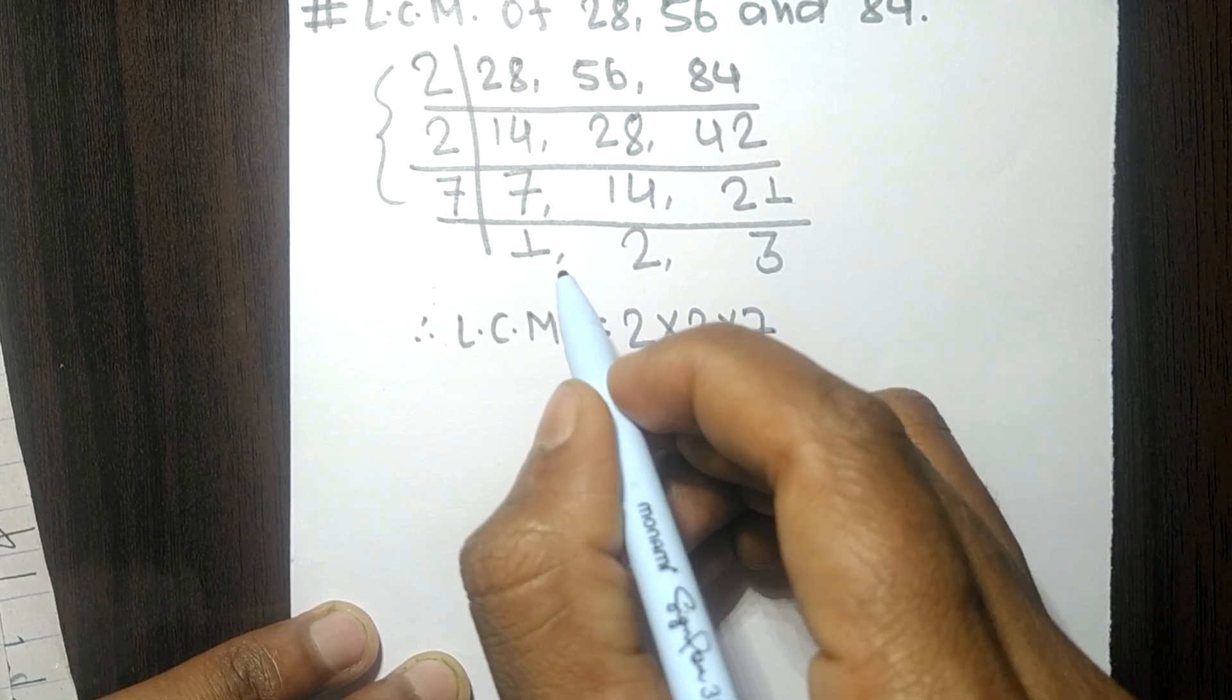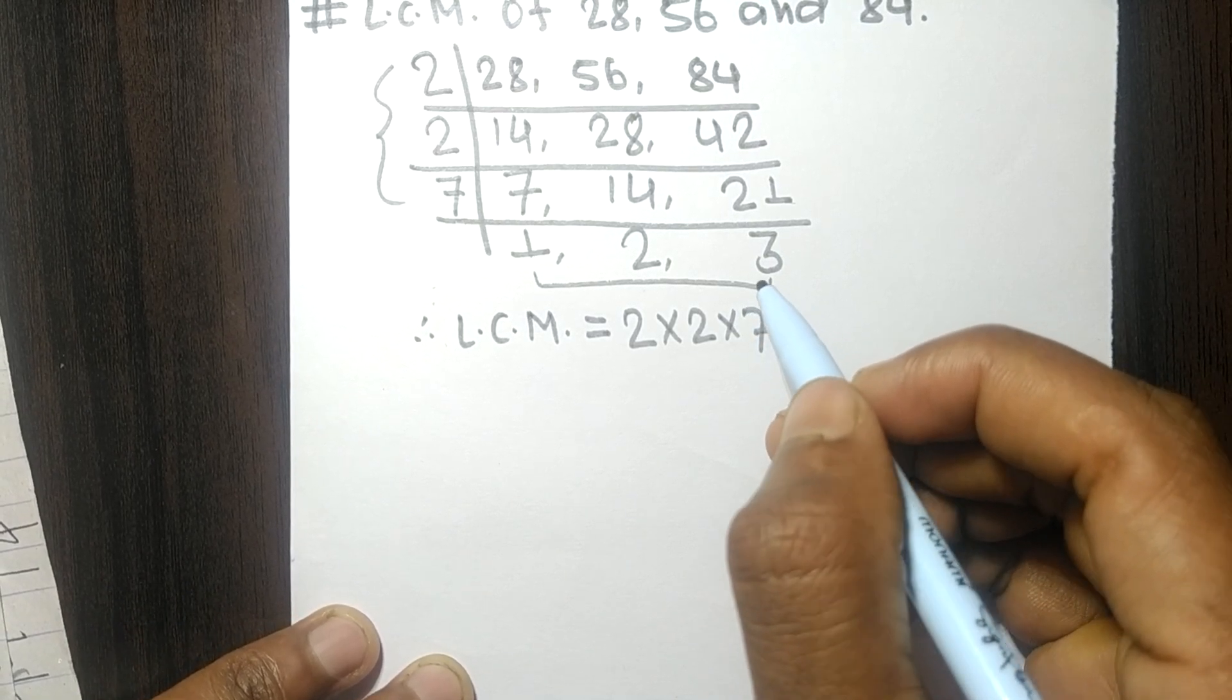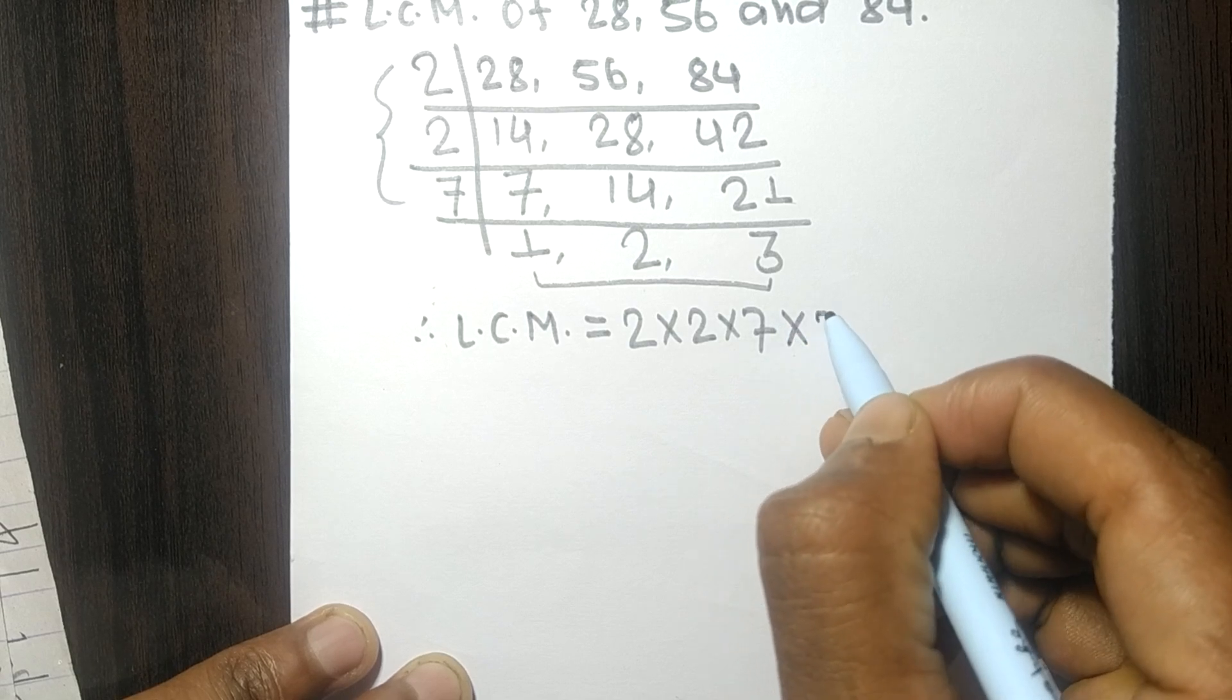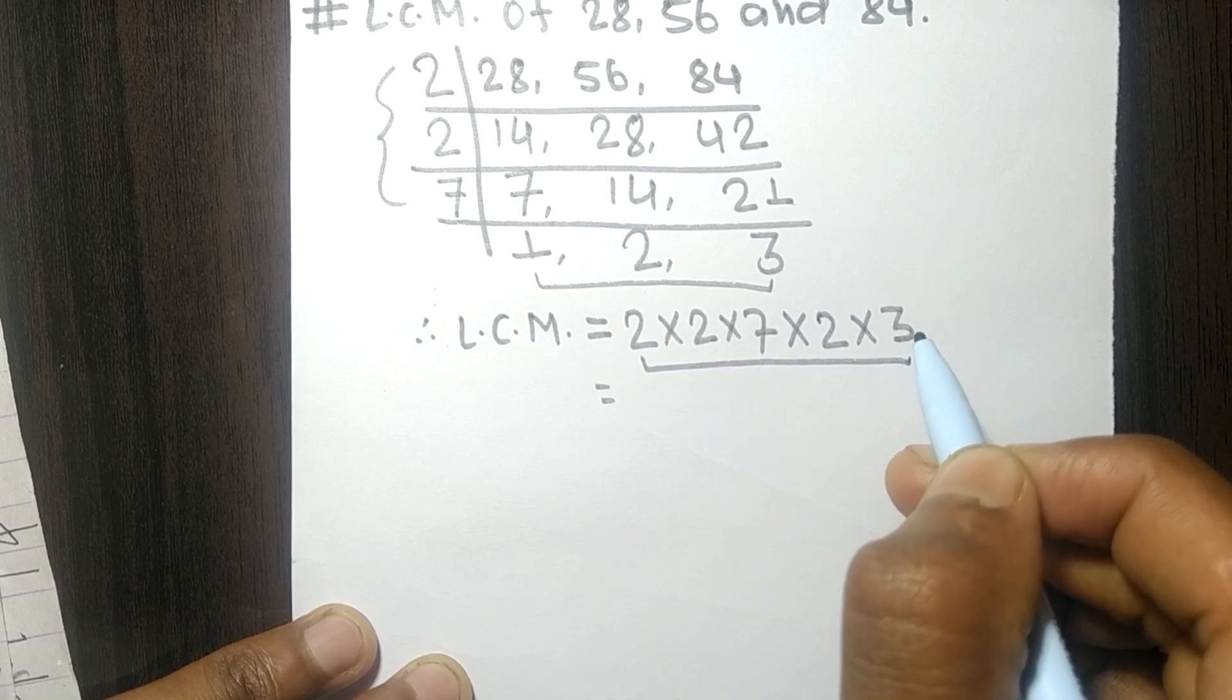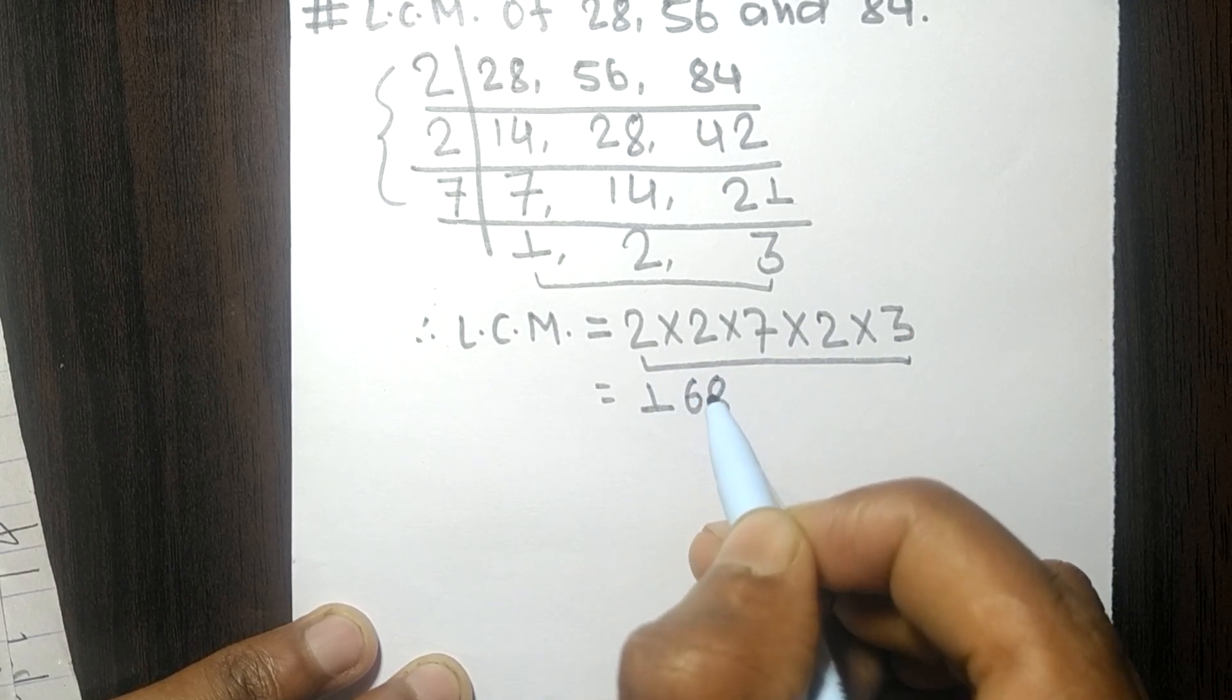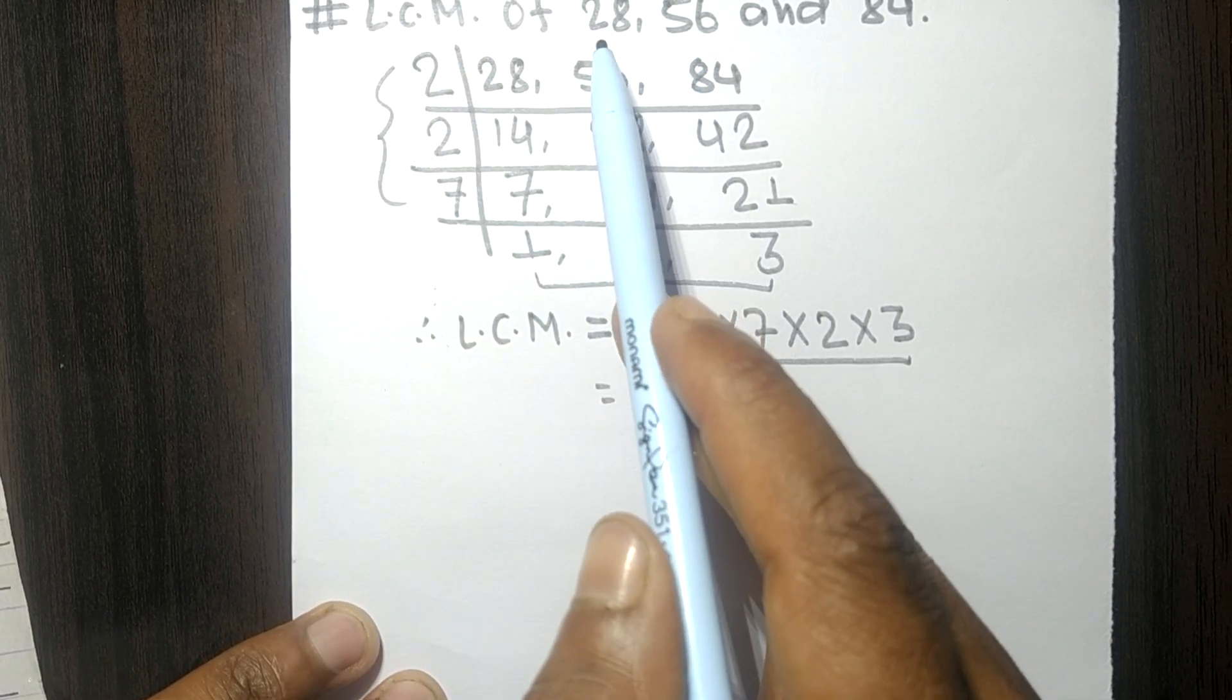And from this side we choose the numbers greater than 1, that is 2 and 3, so multiply by 2 and 3. By multiplying all these numbers we get 168. So 168 is the LCM of 28, 56, and 84.